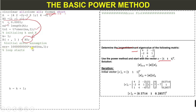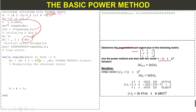We will use a while loop with this condition — when this condition is true, the iteration will stop. This is the basic power method formula: x of k+1 equals matrix A multiplied by the starting vector x of k. This is the basic power method formula.